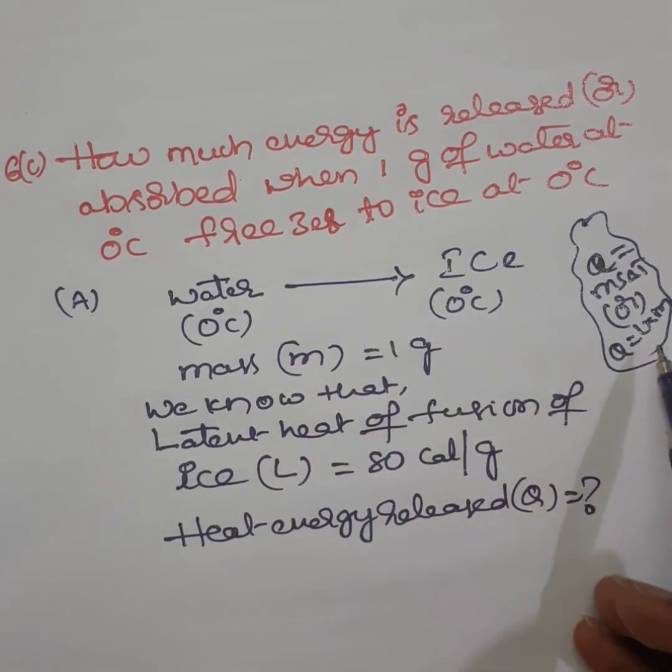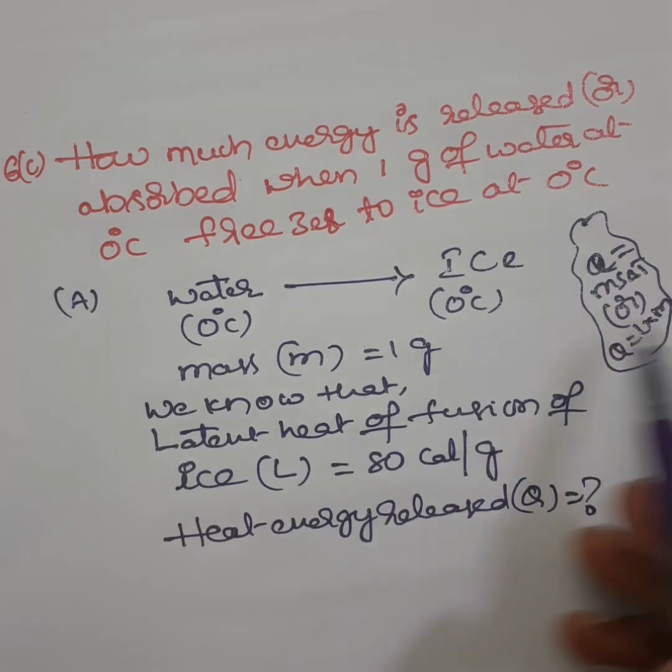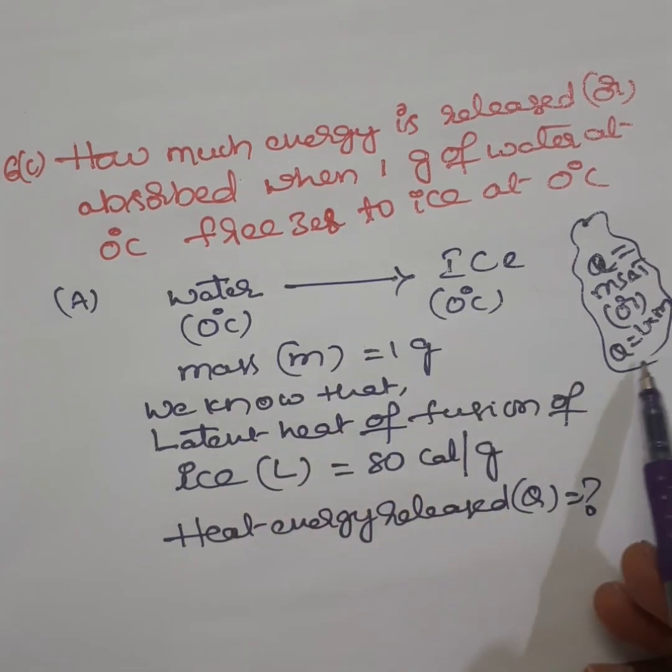When no change in temperature, to calculate amount of heat energy we use the formula Q equals L into M. When there is a change in temperature, to calculate the amount of heat energy we use the formula MS delta T. So here no change in temperature, the formula for heat is Q equals L into M.